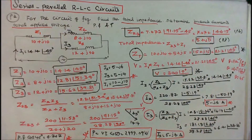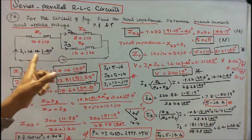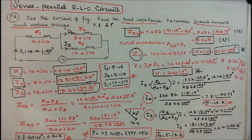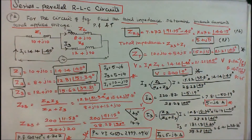Power factor: cos 45° = 0.707, lagging. Real power P = V·I·cos θ, where V = 300, I = 14.14, and cos θ = cos 45° = 0.707. Therefore P = 300 × 14.14 × 0.707 = 2999.09 watts.